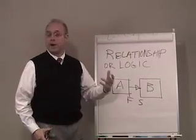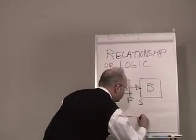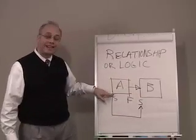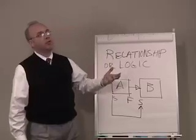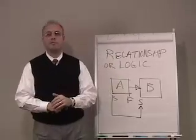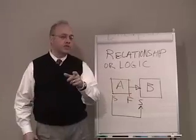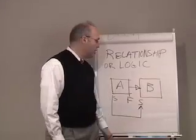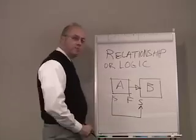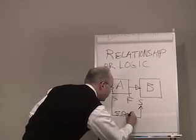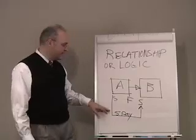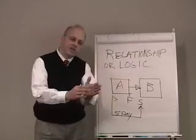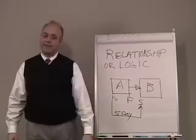Another kind of relationship is a start-to-start relationship, where activity B can't start until after activity A starts. For example, we might say we can't start roughing in mechanicals and electricals until after the metal stud rough-in begins. Sometimes we'll put a lag between those starts — say five days — meaning the start of activity B will lag the start of activity A by five days. That lag represents the amount of time we wait between the start of one activity and the next.